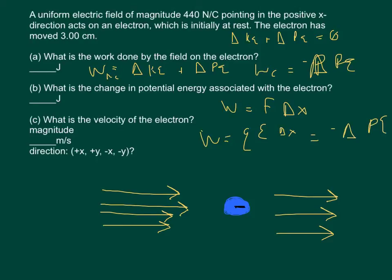In order to find PE, we simply move the negative sign in front of qE·delta x. The key point is that the problem asks us first to find the work, and second to find the change in potential energy — so the change in potential energy will be the same number as the work but with a negative sign in front of it.